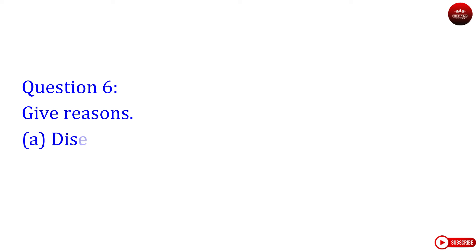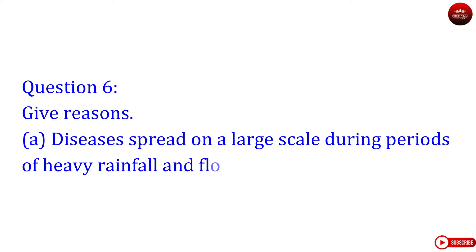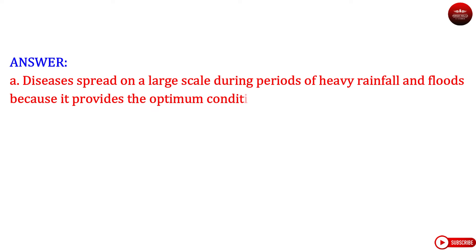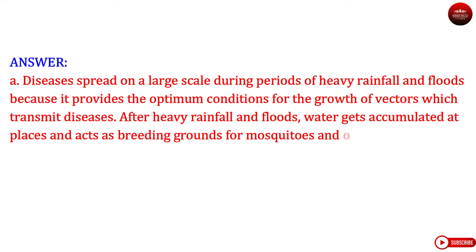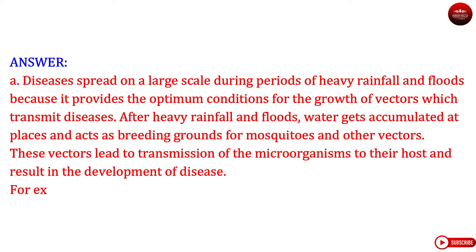Plant diseases include citrus canker caused by bacteria, rust of wheat caused by fungi, and yellow vein mosaic of bhindi (okra) caused by virus. Question 6: Give reasons. A. Diseases spread on a large scale during periods of heavy rainfall and floods. Answer. Diseases spread on a large scale during periods of heavy rainfall and floods because it provides the optimum conditions for the growth of vectors which transmit diseases.